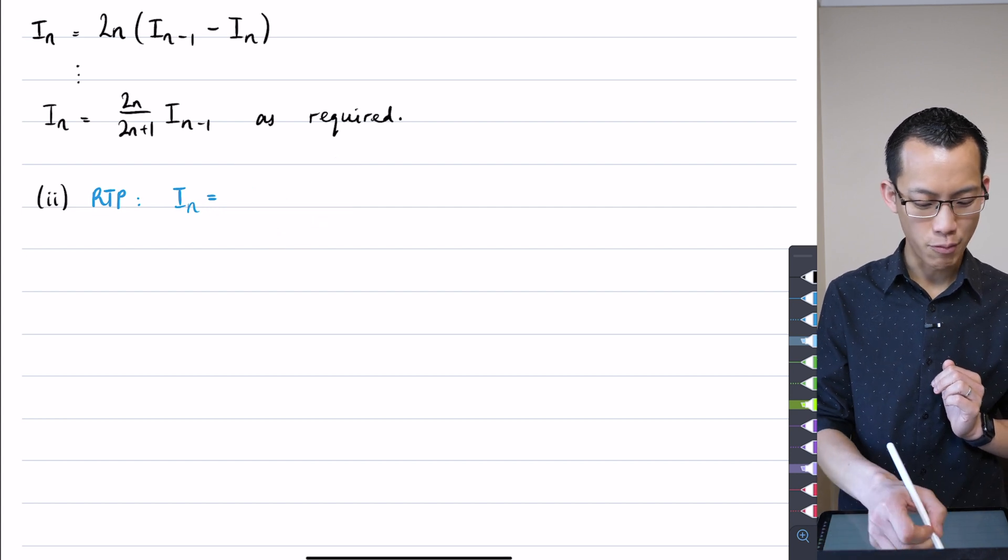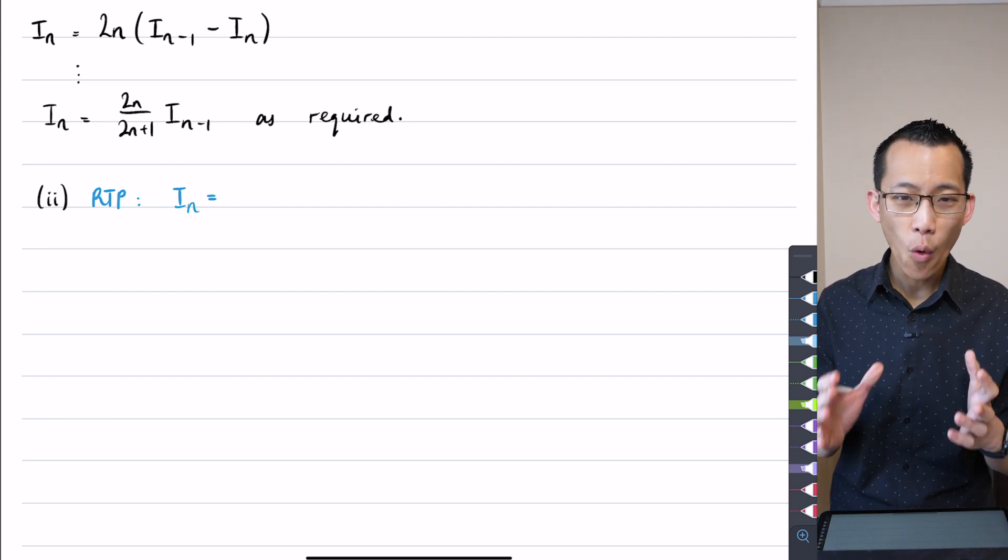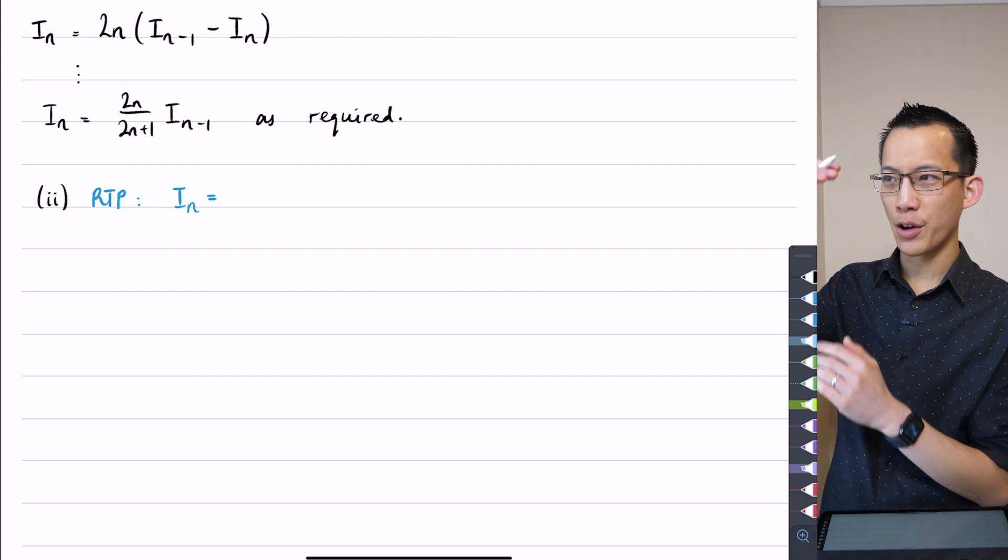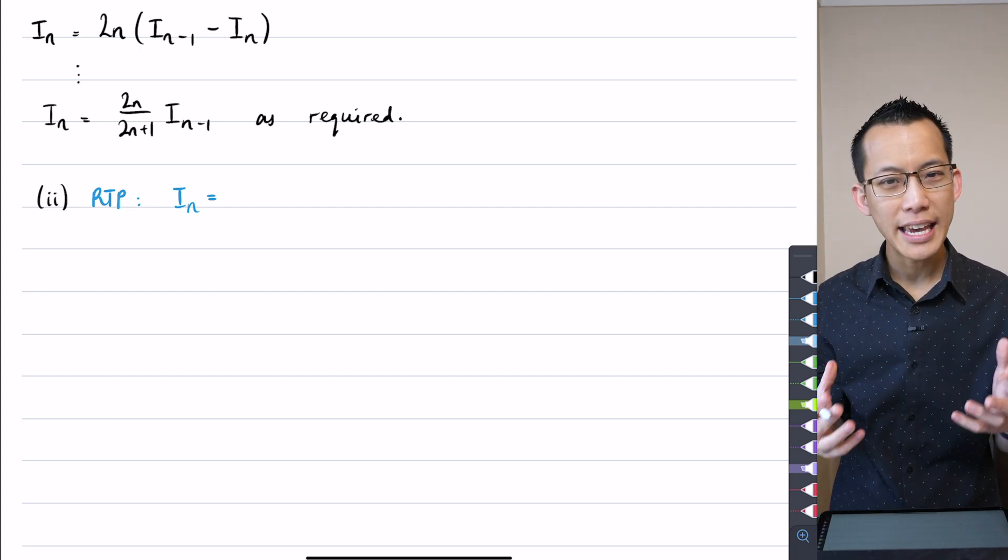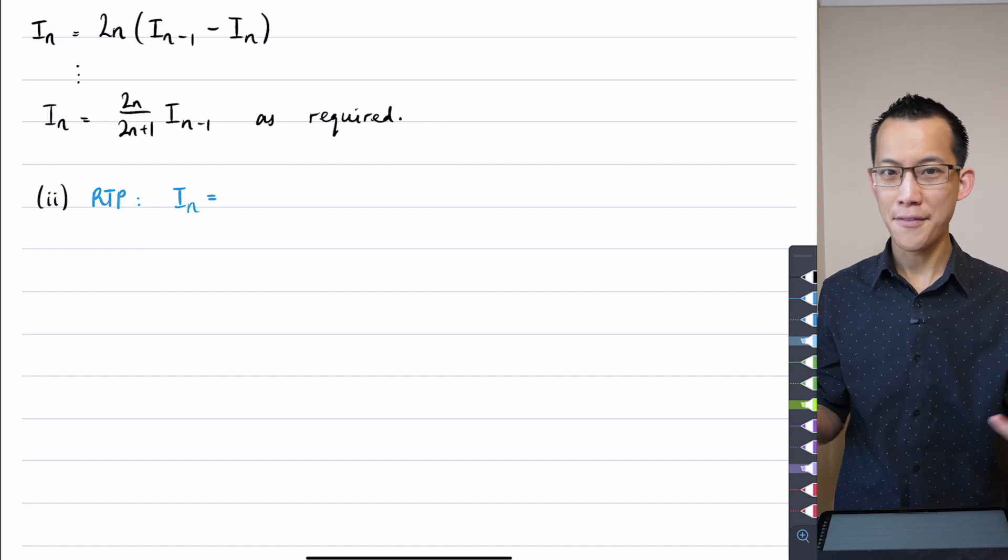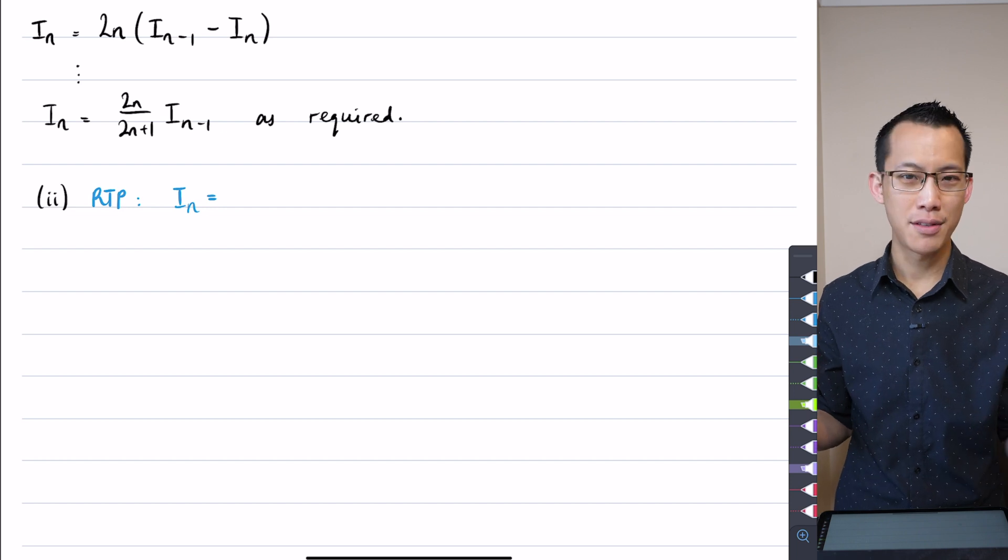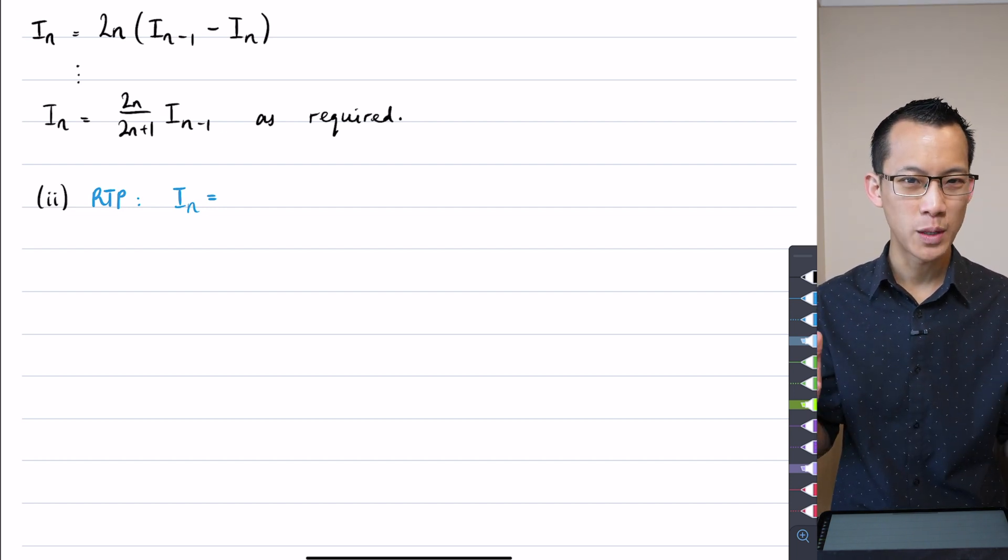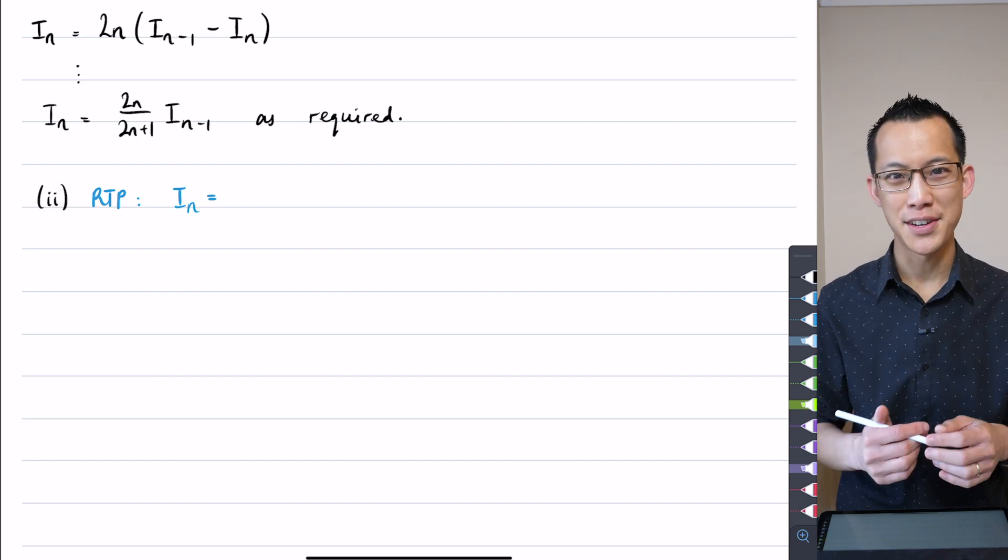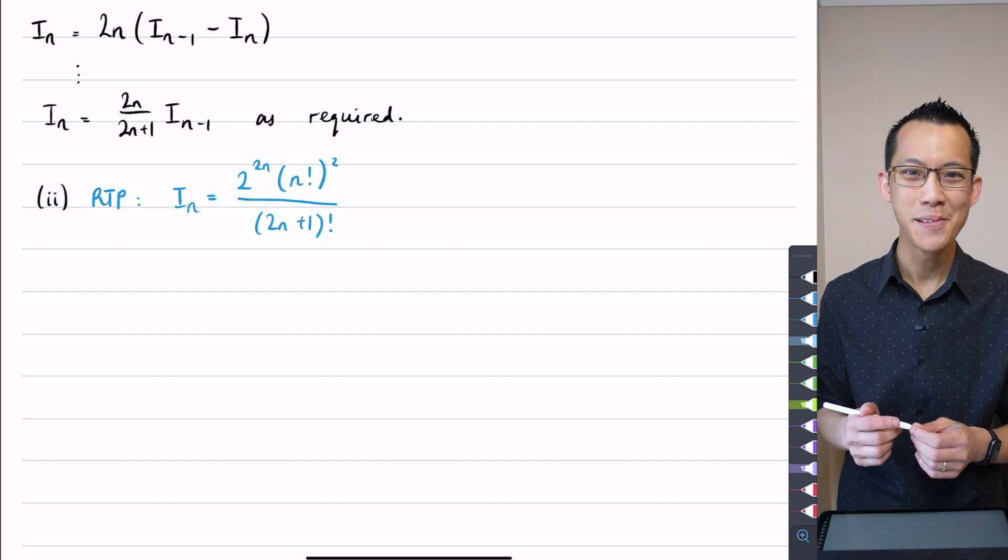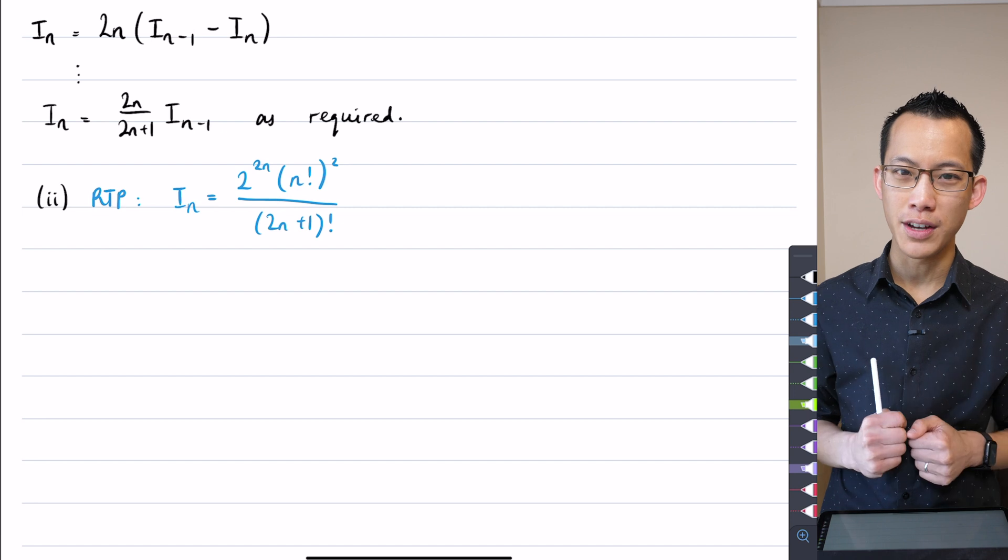We are trying to express In without any integrals on the right hand side. If you just ignored this, like just imagine it wasn't there, it was In and then on the right hand side, you've just got stuff without integrals. That always means we're going to try and go from our recurrence relation and step down, down, down, down, down the ladder until we get to a point where we can actually evaluate one of those integrals. We've done this a bunch of times before.